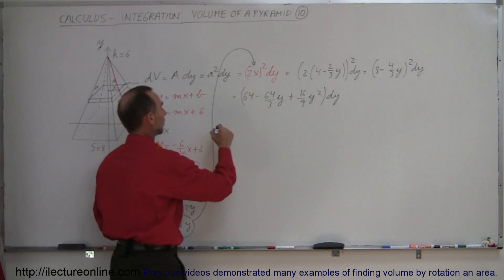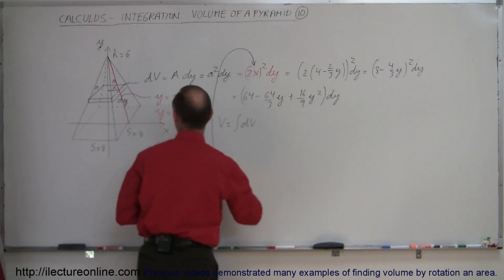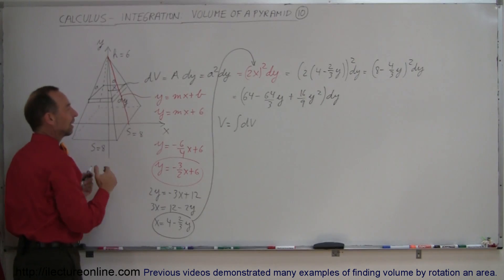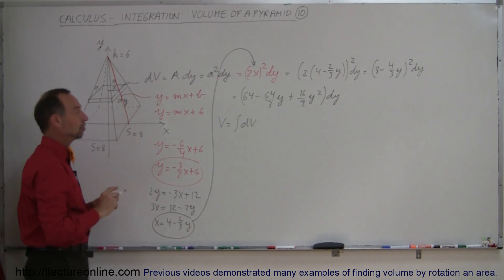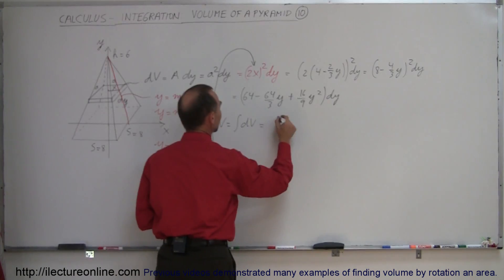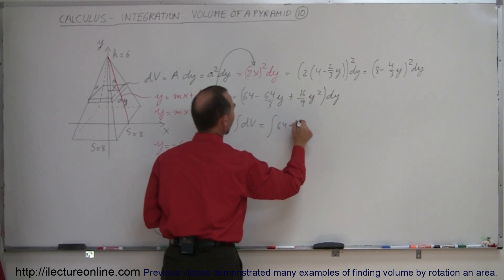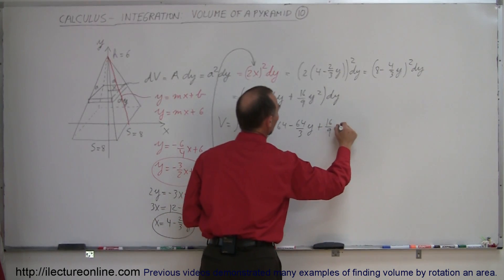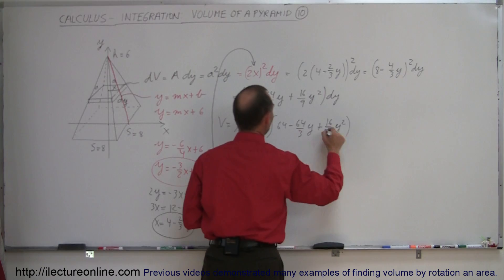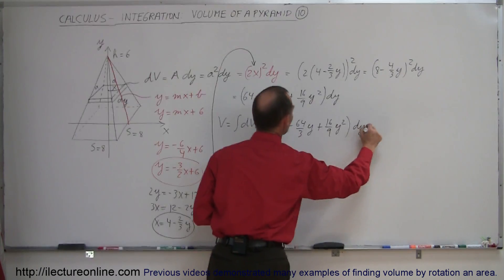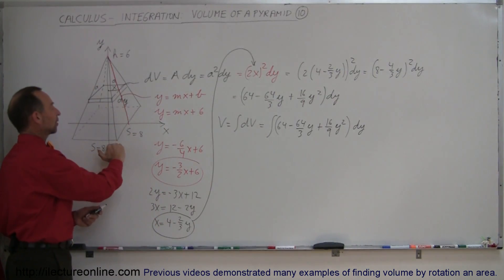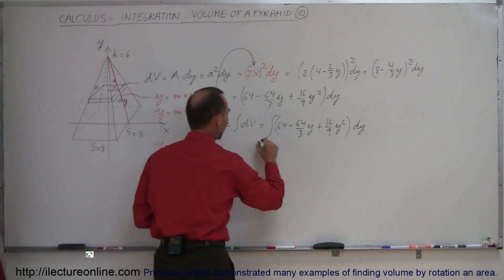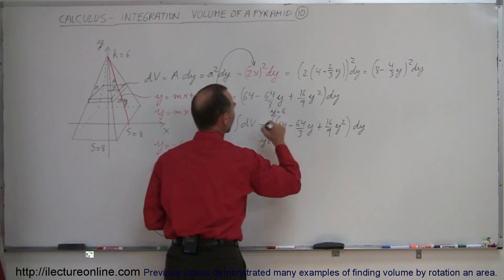Now we can go ahead and integrate, because the volume is equal to the integral of all the dV. We're going to slice up the whole pyramid, add all the slices up, and that's the definition of integration. So this is going to be equal to the integral of (64 minus 64/3 y plus 16/9 y²) dy, with limits of integration from y equals 0 at the bottom of the pyramid to y equals 6 at the top.